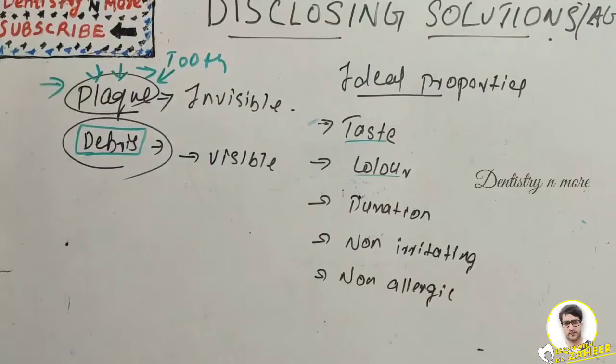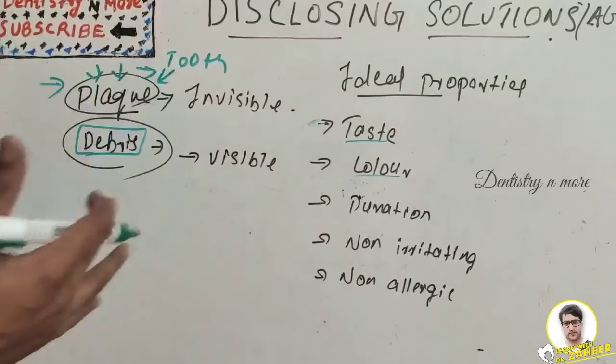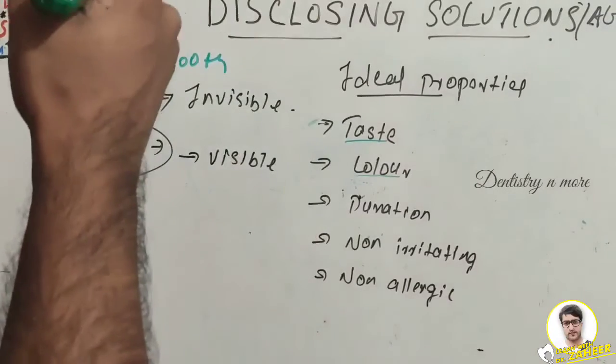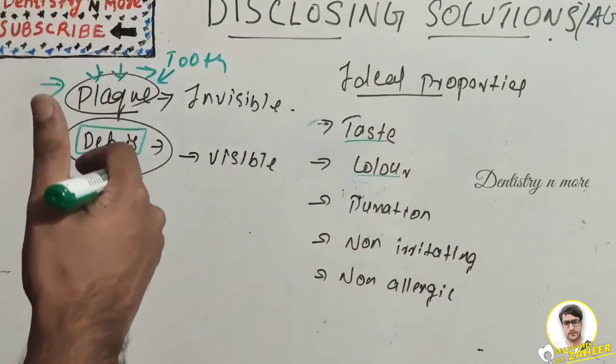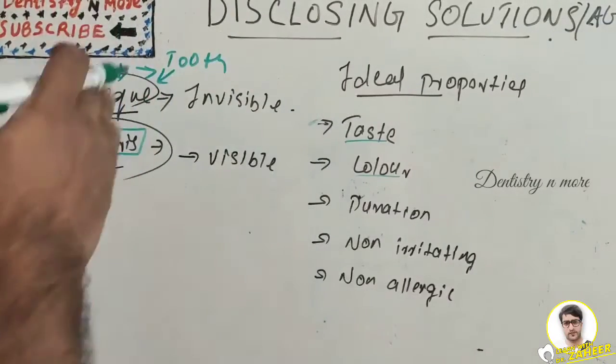Additionally, the dye must be capable of adequately penetrating the plaque deposit, it should be water soluble, and it should have selective staining efficacy — meaning it should stain old plaque and new plaque differently.